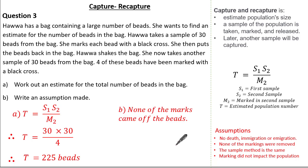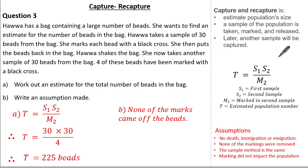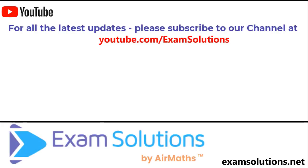In summary, Capture and Recapture is used to estimate a population size. First we capture, then mark and release, then recapture and look at the numbers marked. Use the formula T equals S1 times S2 over M2 to calculate the total, being aware it can be written in different ways. Remember to choose the correct assumptions according to the context of the question. If you liked this video, please give us a thumbs up, leave your comments below, and subscribe to the channel.